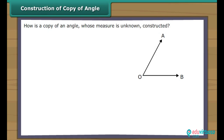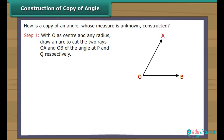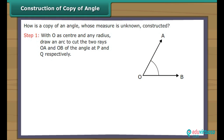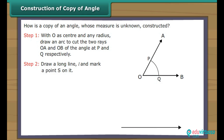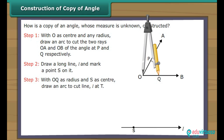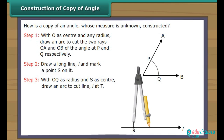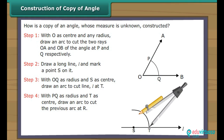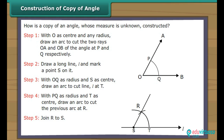Construction of copy of an angle. How do we construct a copy of an angle whose measure is unknown? Angle AOB is given. With O as centre and any radius, draw an arc to cut the two rays OA and OB at P and Q respectively. Draw a long line L and mark a point S on it. With OQ as radius and S as centre, draw an arc to cut line L at T. With PQ as radius and T as centre, draw an arc to cut the previous arc at R. Join R to S. Angle RST is equal to angle AOB.